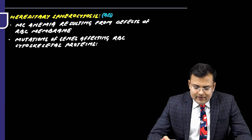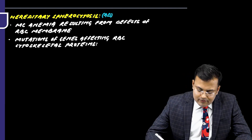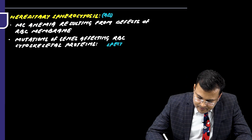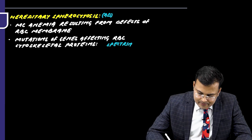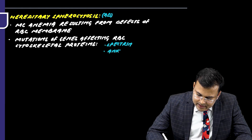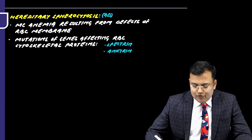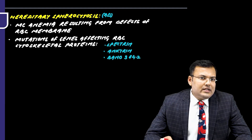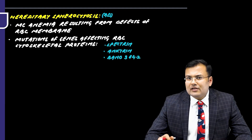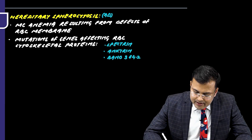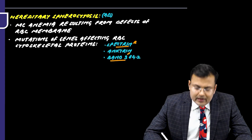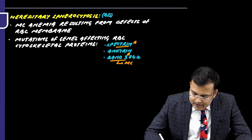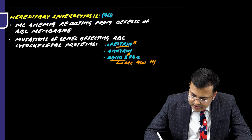The genetic mutations which affect RBC cytoskeletal proteins are: first, spectrin; second, ankyrin; and third, band 3 and 4.2. Out of these, the mutations most frequently associated with hereditary spherocytosis are spectrin and band 3.